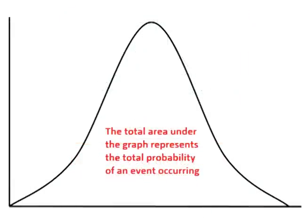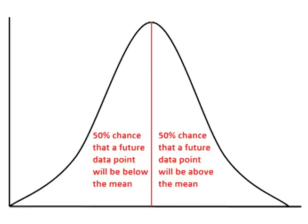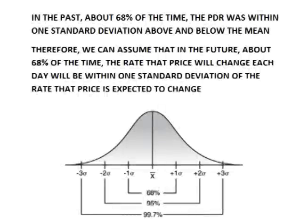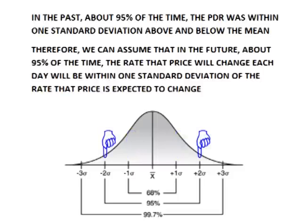The area under a normal distribution curve represents the total probability of an event occurring. Half the curve is below the mean, so there is a 50% chance a future data point will be below the expected value and a 50% chance it will be above. A normal distribution follows the empirical rule: about 68% of the data falls within one standard deviation of the mean, and about 95% falls within two standard deviations. So we can assume that about 68% of the time in the future, the daily rate of change will be within one standard deviation of the expected rate, and about 95% of the time within two standard deviations.